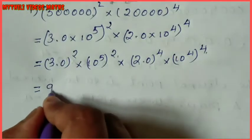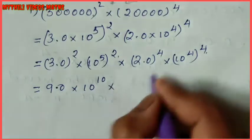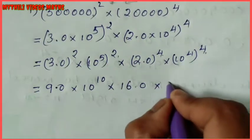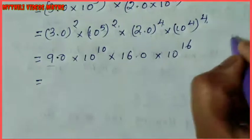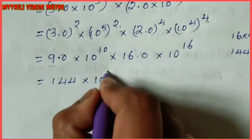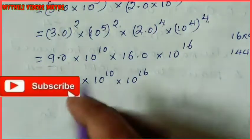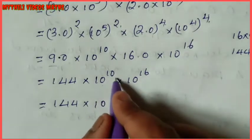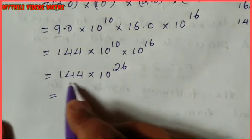3 squared is 9. Then multiplying the terms: 144 into 10 power 10, into 10 power 16. In two terms, when the bases are equal, we add the powers. So 10 plus 16 gives power 26. We now write 144 into 10 power 26 in scientific notation.